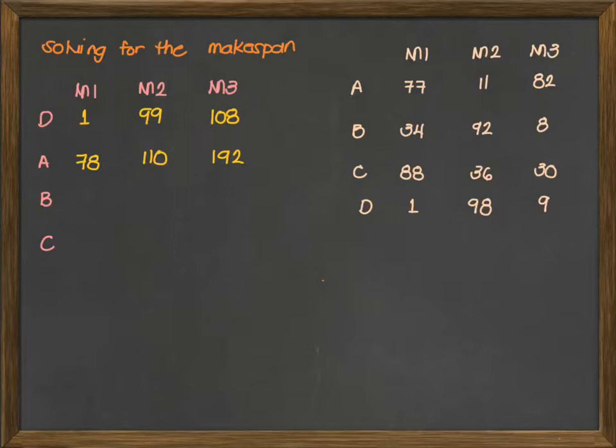For job B, we have 78 plus 34, that's 112. Comparing the two, 112 will be chosen, plus 92, that's 204. Then 204 and 192 compared, so 204 will be chosen, plus 8, that's 212. Lastly, for job C, that's 112 plus 88, that's 200. Compare the two, 200 and 204. So 204 plus 36 is 240. And finally, 240 and 212. That's 240 plus 30. We have a total of 270 units.